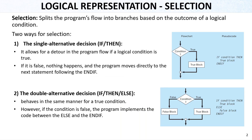The second logical representation is selection. Selection splits the program's flow into branches based on the outcome of a logical condition — this is basically for if-statements. There are two general ways for selection. The first is the single alternative decision: if and then. In the flowchart, if the condition is true, it goes to the true block; if it is false, it just goes to the end. There is no false block, which is why it is called single alternative decision.